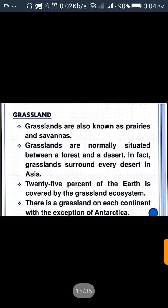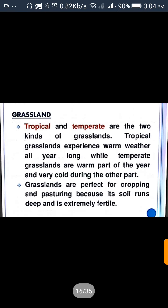Grasslands are also known as prairies and savannahs. Grasslands are normally situated between a forest and a desert. About 25 percent of the Earth is covered by the grassland ecosystem. There is grassland on each continent with the exception of Antarctica. There are two kinds of grassland: tropical and temperate. Tropical grasslands experience warm weather all year long, while temperate grasslands are warm part of the year and very cool during the other part.